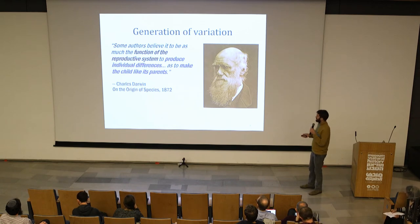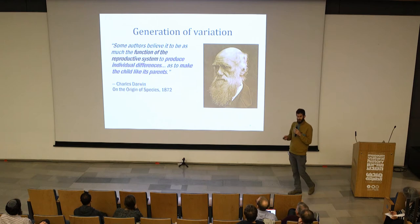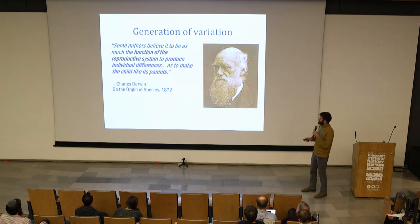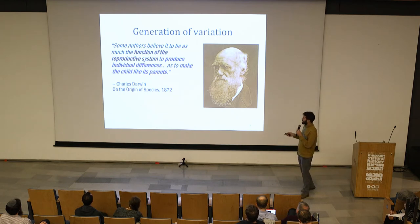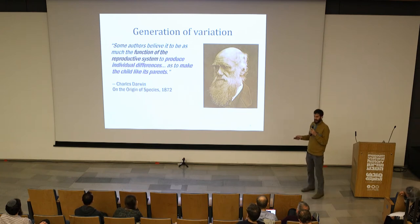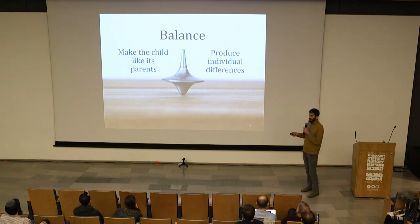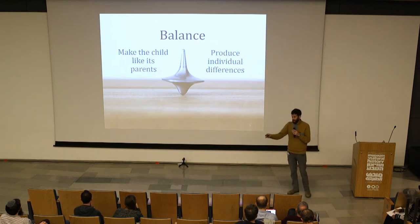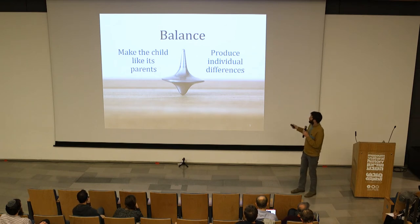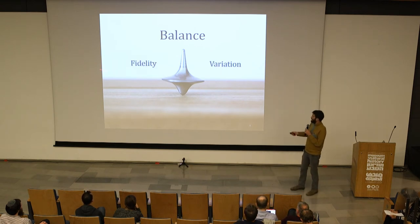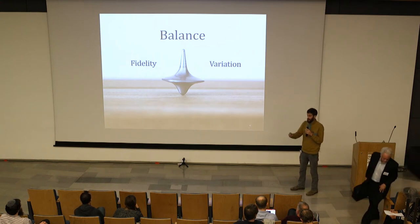I'm going to start with Darwin. Darwin said that some authors believe it to be the function of the reproductive system to produce individual differences as much as it is to make the child like its parents. This is essentially talking about some balance that the reproductive system has to make between making the child like its parents — so that they will be able to produce children as well — and on the other side, producing individual differences, because circumstances change. We can summarize this as a balance between fidelity in transmission and generation of variation.